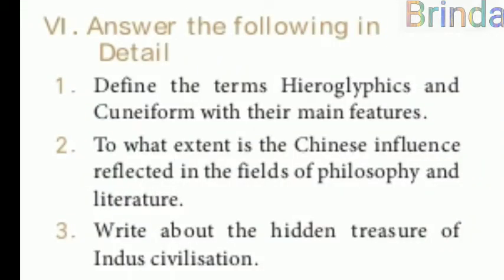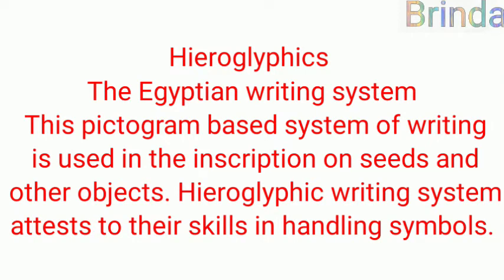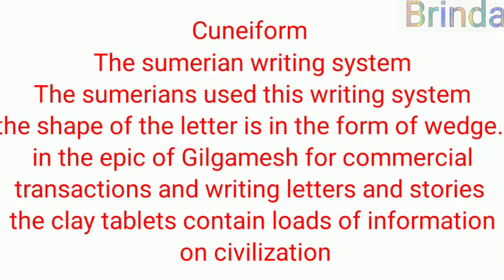Moving on to answer the following in detail. Define the terms hieroglyphics and cuneiform with their main features. Hieroglyphics is the Egyptian writing system — this pictogram-based system of writing is used in inscriptions on seeds and other objects, attesting to their skill in handling symbols. Cuneiform is the Sumerian writing system where the shape of the letter is in the form of a wedge. It was used in the epic of Gilgamesh, for commercial transactions, writing letters and stories. The clay tablets contain loads of information on civilization.